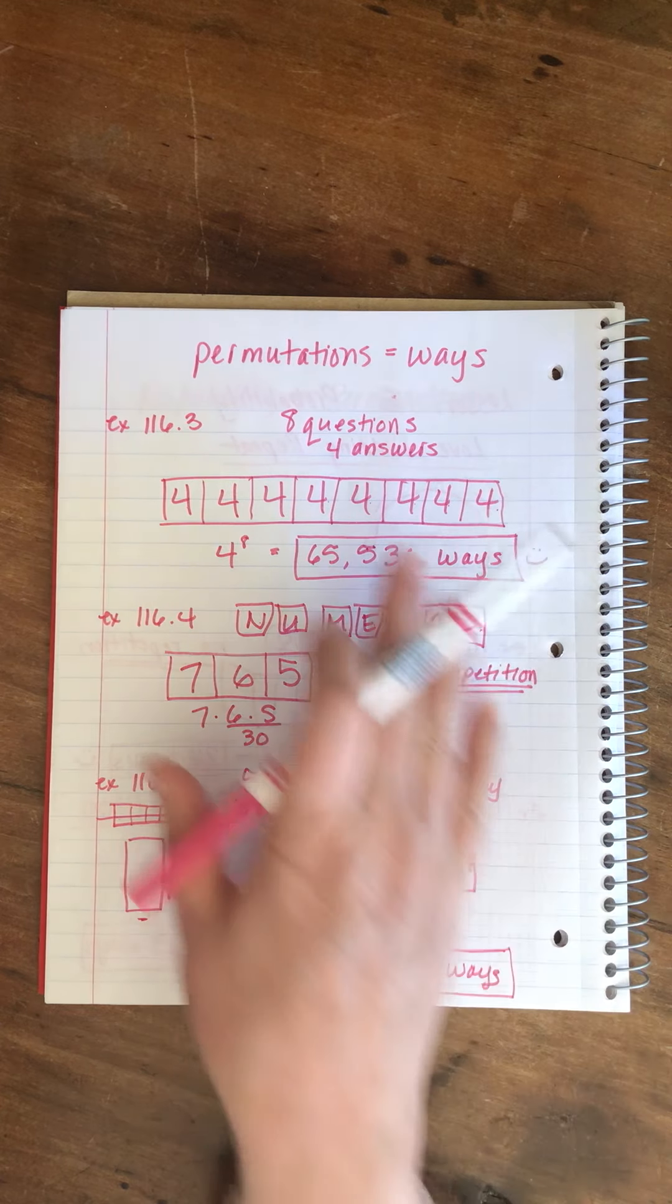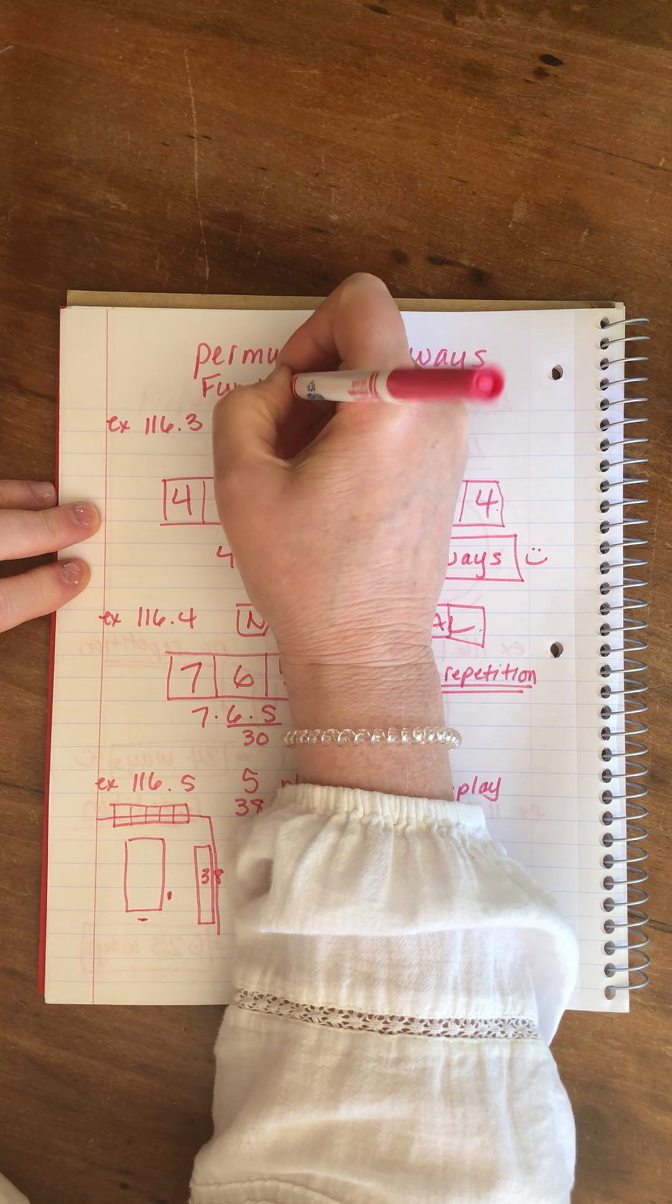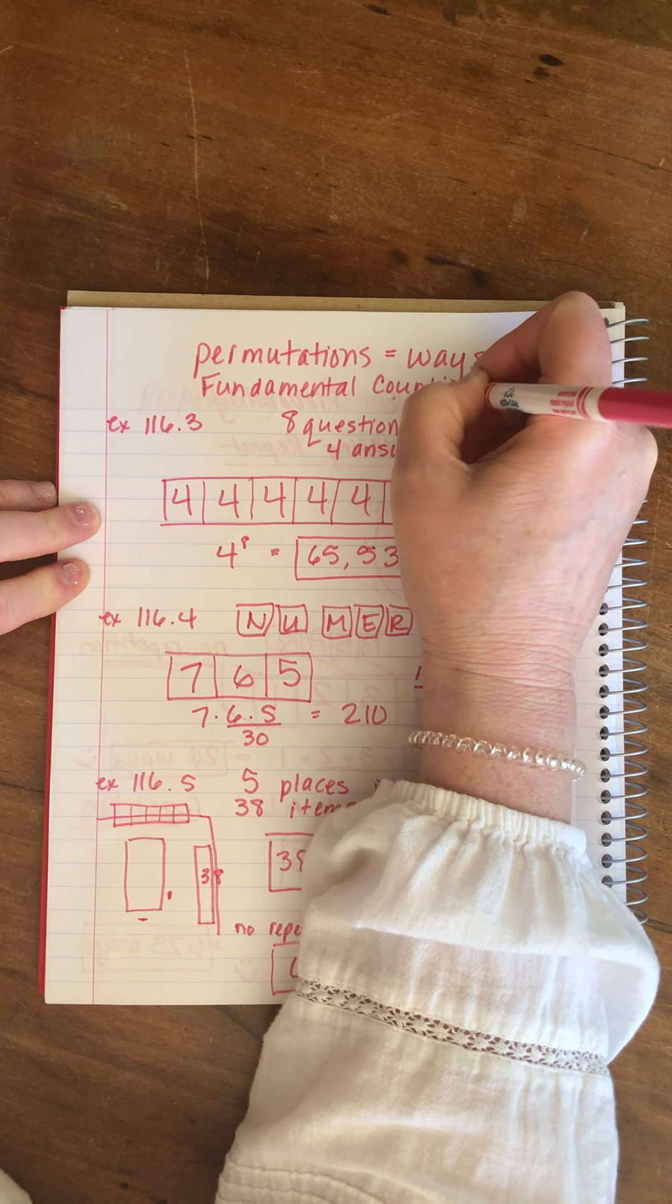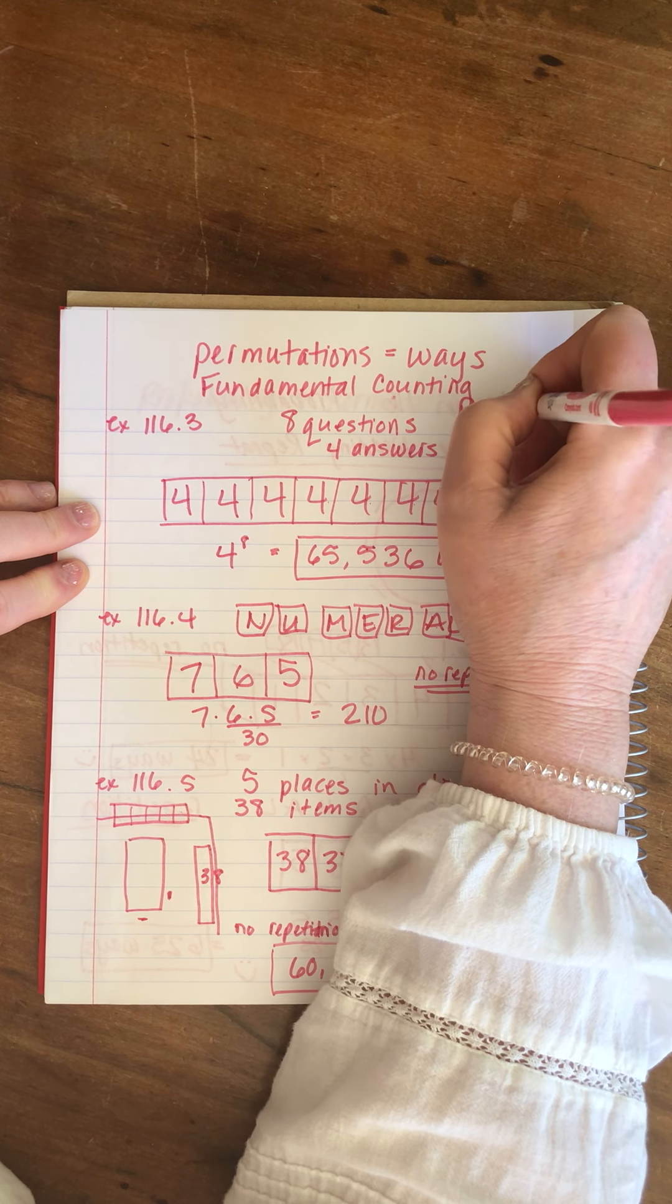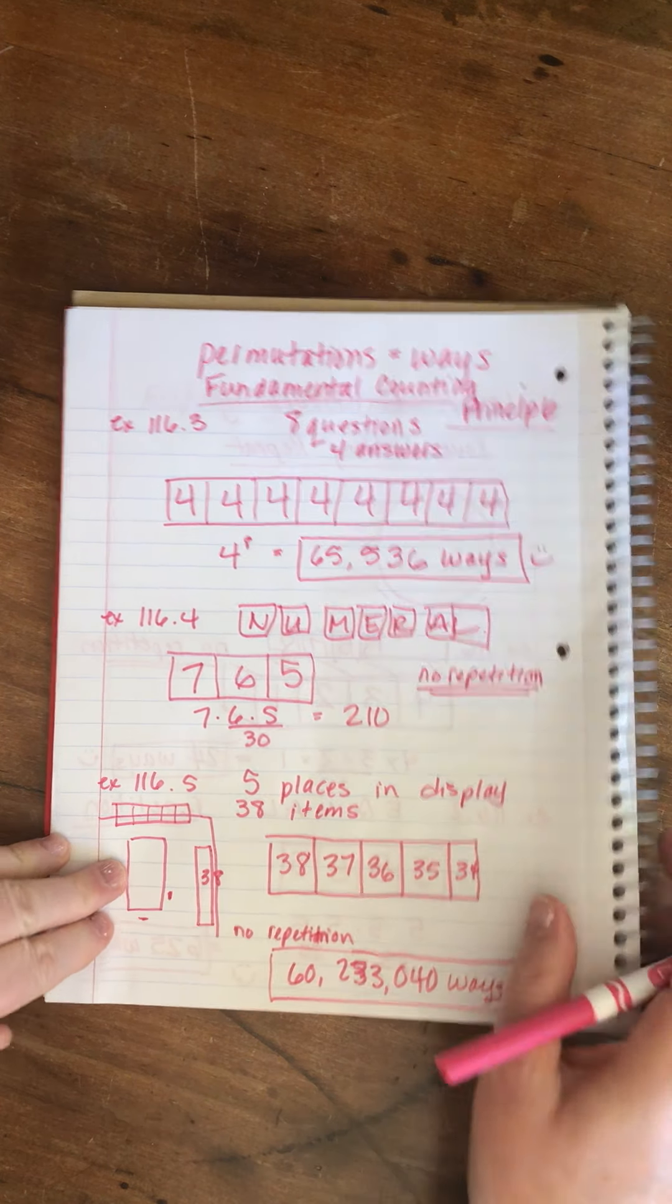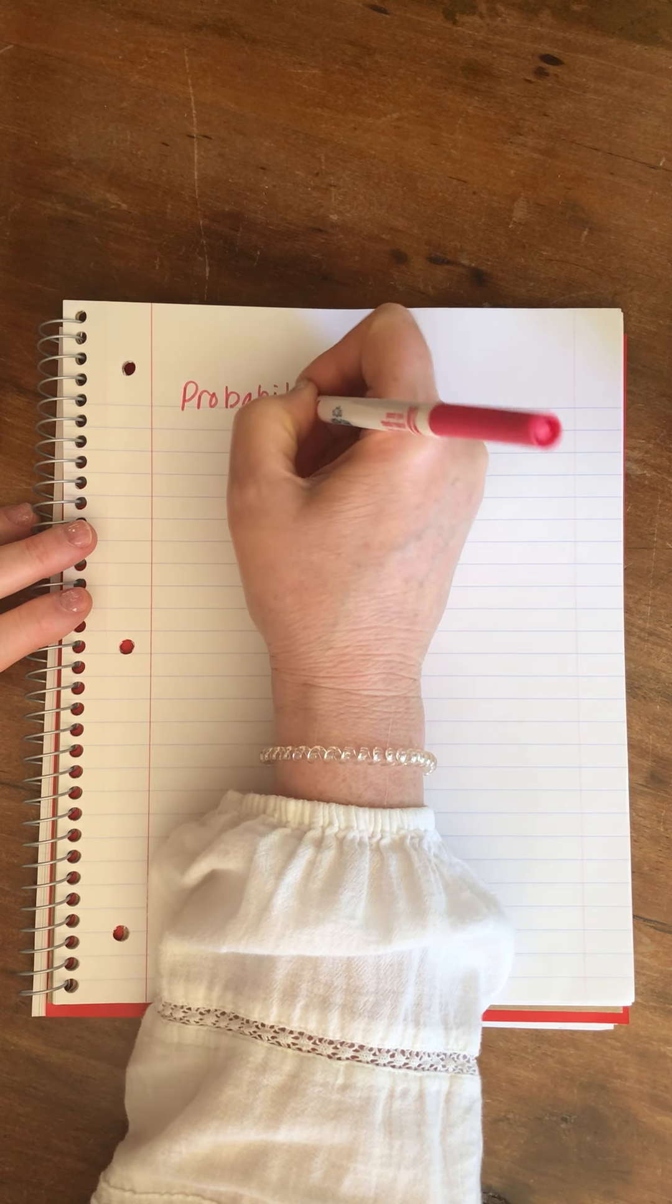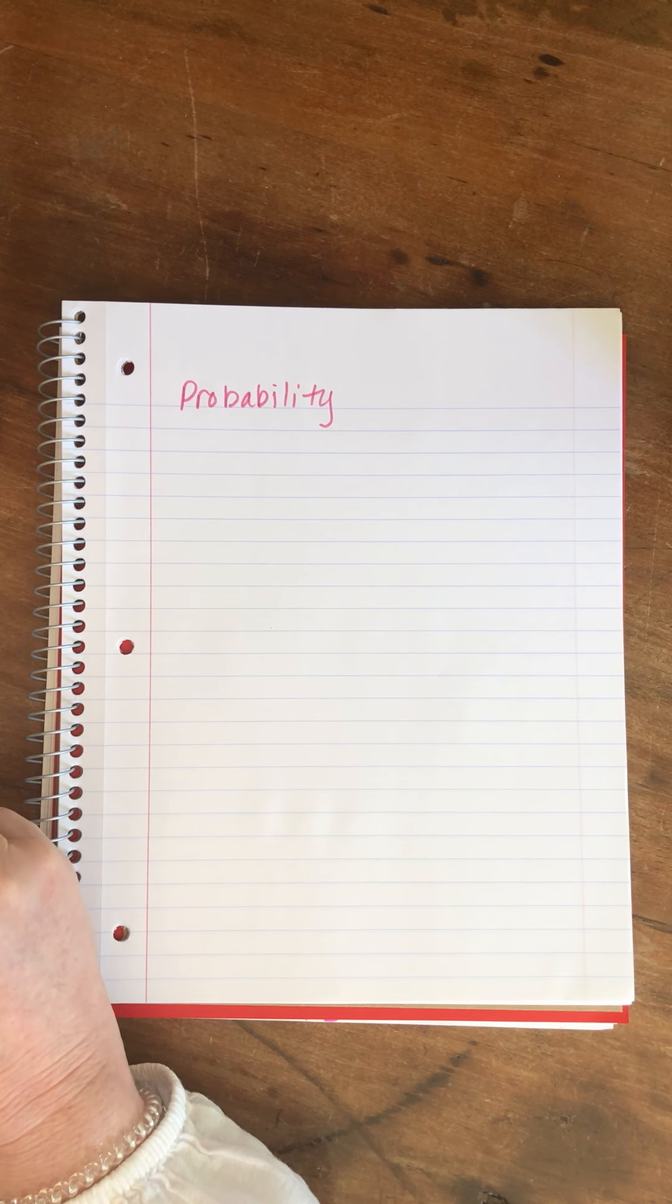There are 38 options for the first space. This problem doesn't tell us if we have repetition or not, but we can assume by inference that there's no repetition, that 38 represents the total number of things. If we pull out a gravy boat, there aren't magically more gravy boats appearing behind it. So when we go to put the next item, there's only 37, then 36, then 35, then 34. When we multiply those five numbers together, 38 times 37 times 36 times 35 times 34, that is how many different ways we can arrange the items. This whole idea, the way that we're doing this, is technically called fundamental counting principle. That's what this process is called. Now we're going to talk a little bit more about probability.